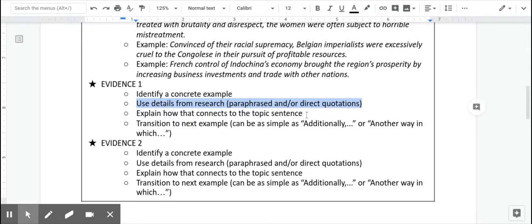And then you want to explain how that evidence connects back to this idea. So why were the men separated from the women? Well, they were separated from the women because they knew that the men were going to want to go back to their families. So in order to get their profitable resources, they did these psychological things to the Congolese to achieve their economic end, which is we want as much rubber as possible.